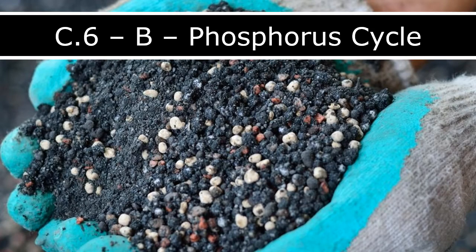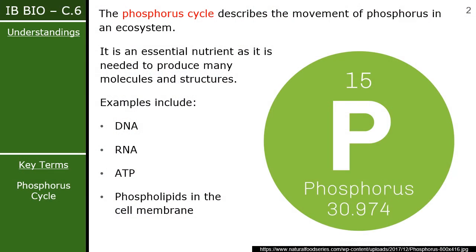We'll continue talking about the phosphorus cycle. In the last video we talked about the nitrogen cycle. The difference is not just the element, but the steps involved. The nitrogen cycle has a lot more complex steps that you need to know, whereas the phosphorus cycle is more focused on the actual movement of phosphorus and a more holistic look at how it affects the ecosystem and what our role is in that.